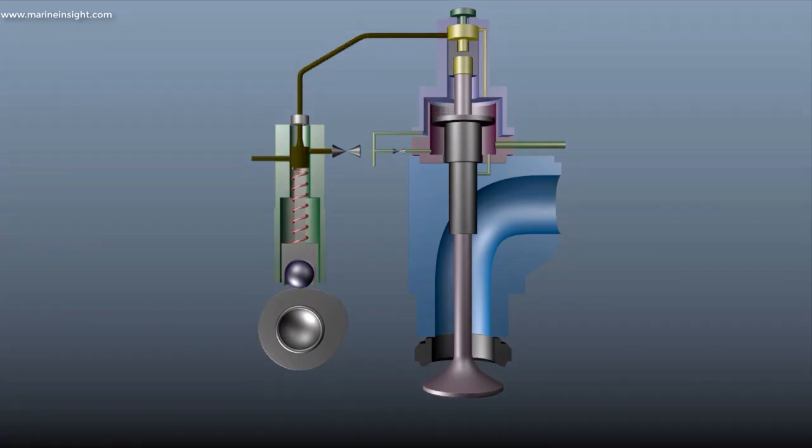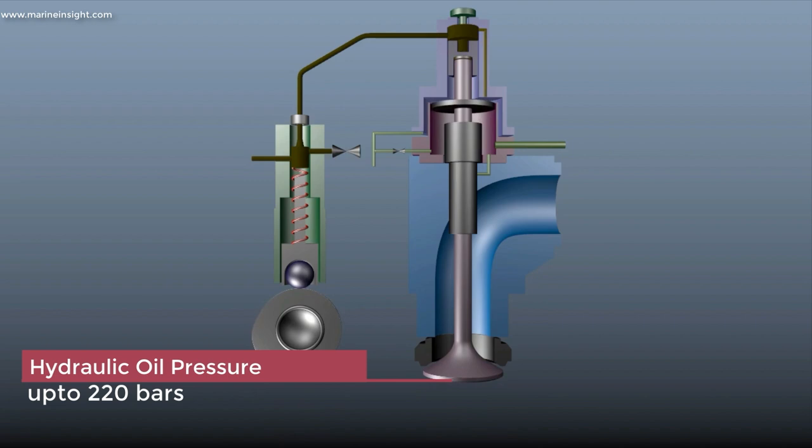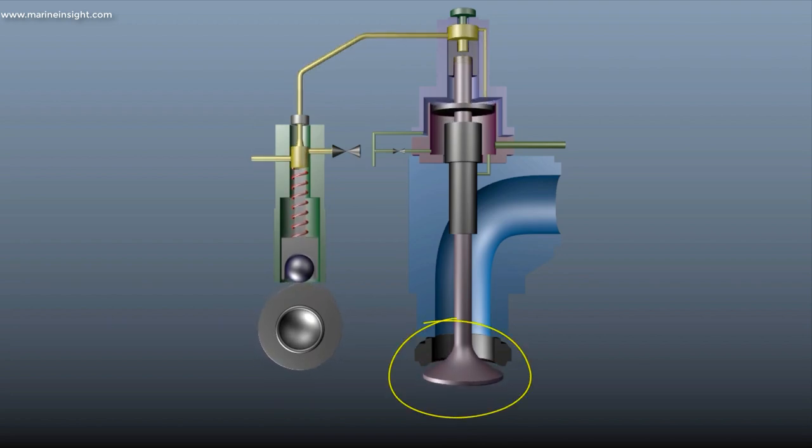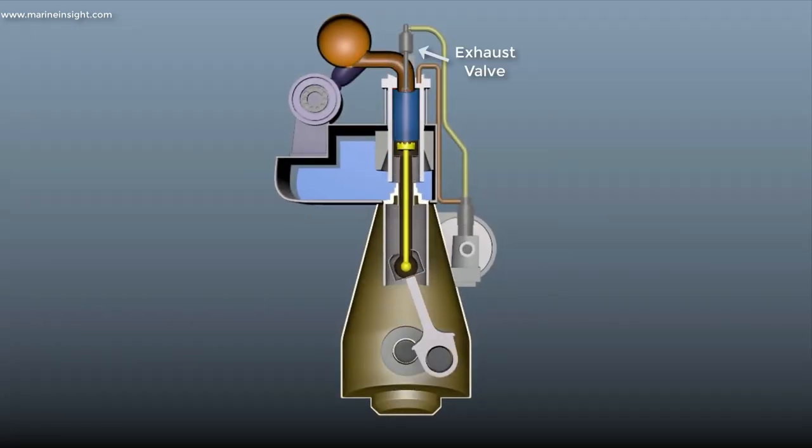The pressure at which the hydraulic oil operates the exhaust valve can go up to 220 bars. As the hydraulic oil pushes the operating piston which is connected to the valve spindle, the valve will move down and allow the exhaust inside the cylinder to flow out of the engine to exhaust trunk.